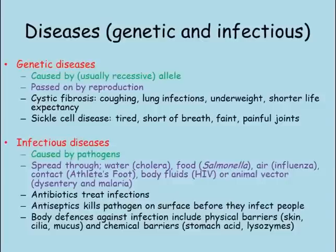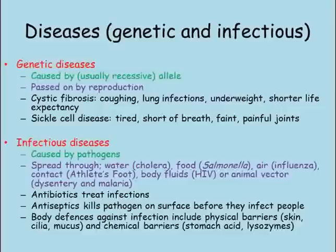So diseases can be genetic or they can be infectious. Genetic diseases such as cystic fibrosis and sickle cell disease are usually caused by a recessive allele for a gene. They cannot be cured and can only be passed on through reproduction. Cystic fibrosis causes thick, sticky mucus to build up in the lungs and pancreas, leading to coughing, lung infections, and being underweight, and it also shortens life expectancy. Sickle cell disease stops the red blood cells carrying as much oxygen as they should, which leads to tiredness, faintness, and painful joints.